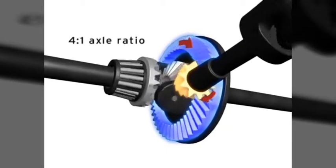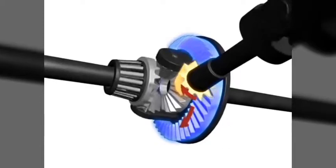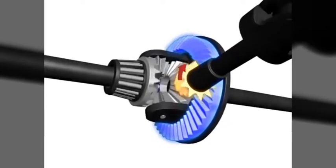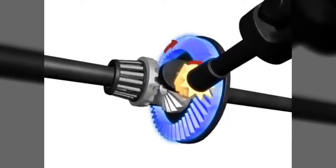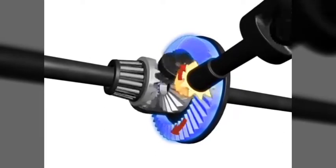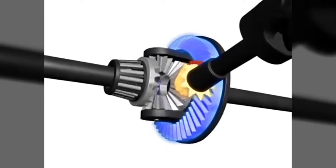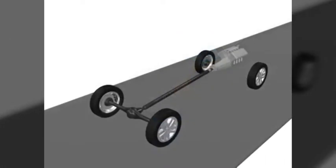By changing the axle ratio, the torque multiplication and top speed is changed, either increasing or decreasing them. Axle ratio is an important component of the transmission gear ratio. All the gear ratios between the engine and drive wheels determine how much power is actually applied to the wheels.